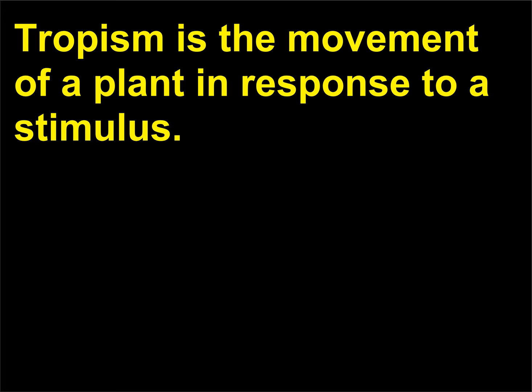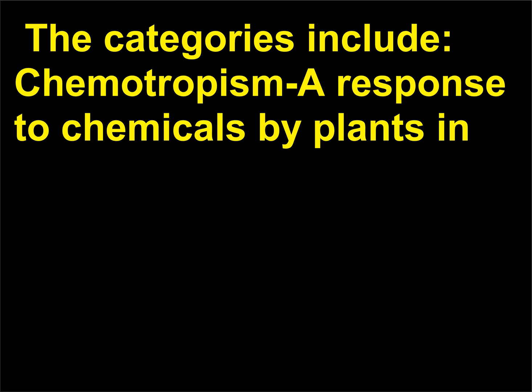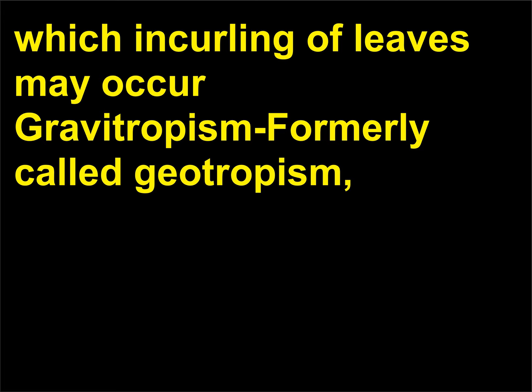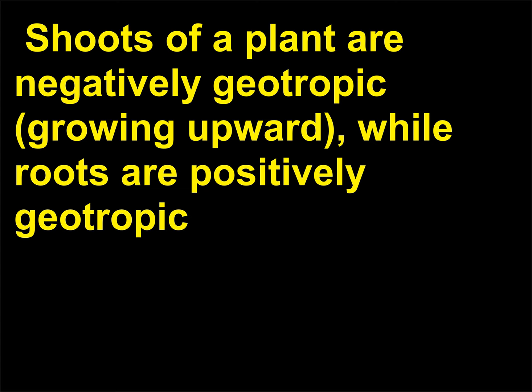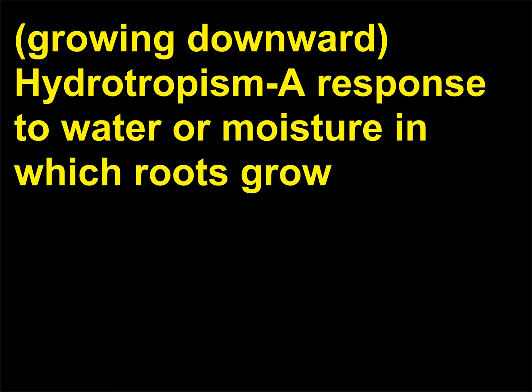What is tropism? Tropism is the movement of a plant in response to a stimulus. The categories include: chemotropism, a response to chemicals by plants in which incurling of leaves may occur; gravitropism, formerly called geotropism, a response to gravity in which the plant moves in relation to gravity — shoots of a plant are negatively geotropic, growing upward, while roots are positively geotropic, growing downward.